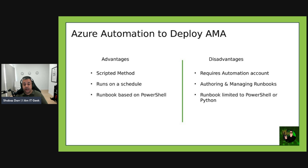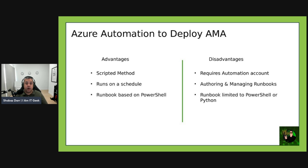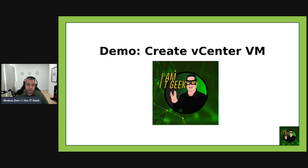Azure Automation is another deployment method — the process automation environment supports PowerShell and Python runbooks and can automate deployment of the Azure Monitor Agent extension at scale. Advantages include using a scripted method to automate deployment and configuration using familiar scripting languages, running on a schedule, and controlling authentication security using a managed identity from an automation account. Disadvantages include requiring an automation account, authoring and managing runbooks, and needing to create a runbook based on PowerShell or Python depending on the target OS.